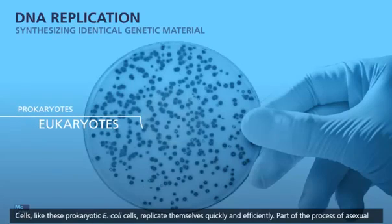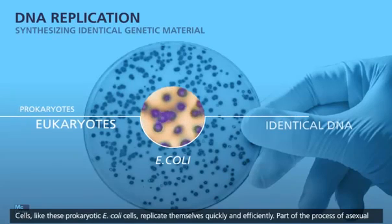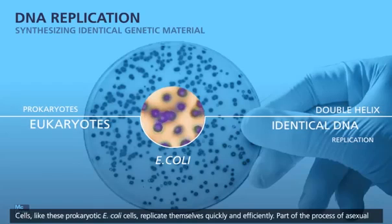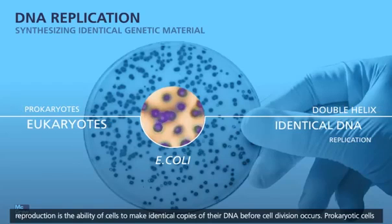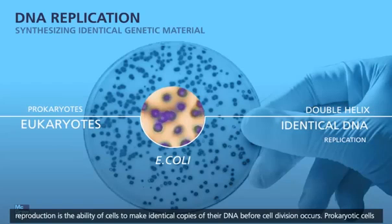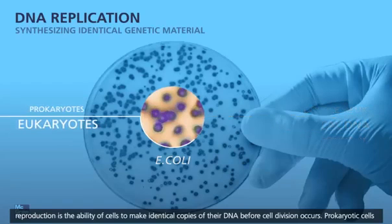Cells like these prokaryotic E. coli cells replicate themselves quickly and efficiently. Part of the process of asexual reproduction is the ability of cells to make identical copies of their DNA before cell division occurs.